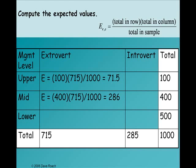In the second cell, 400 is the row total, 715 the column total, divided by 1,000, that's 286.